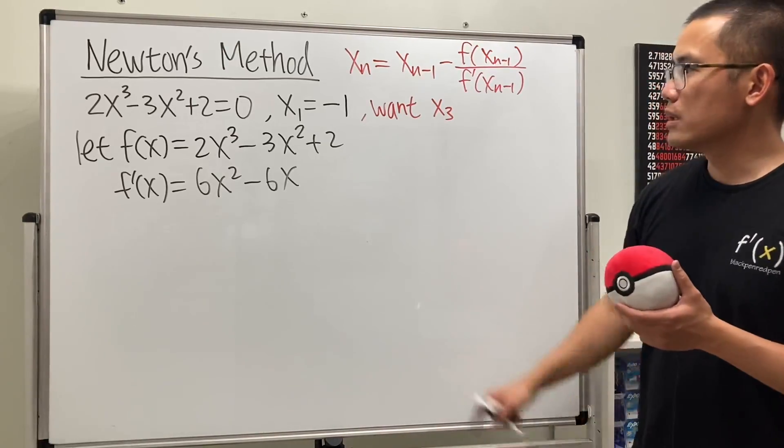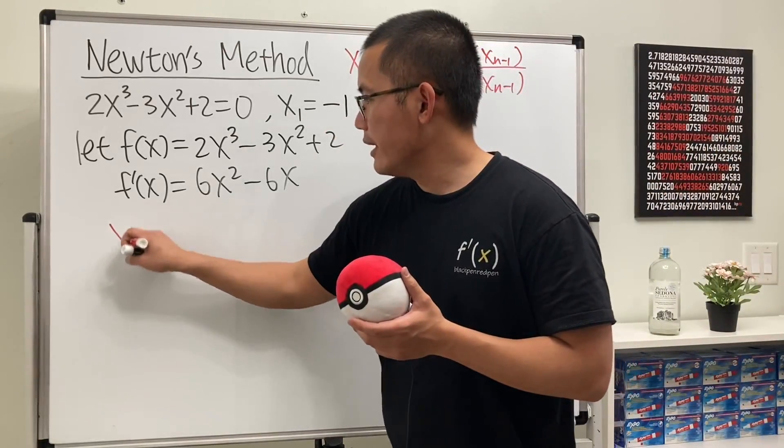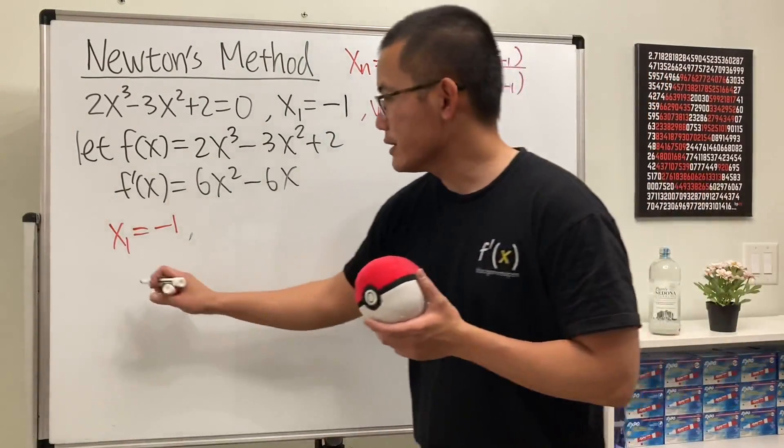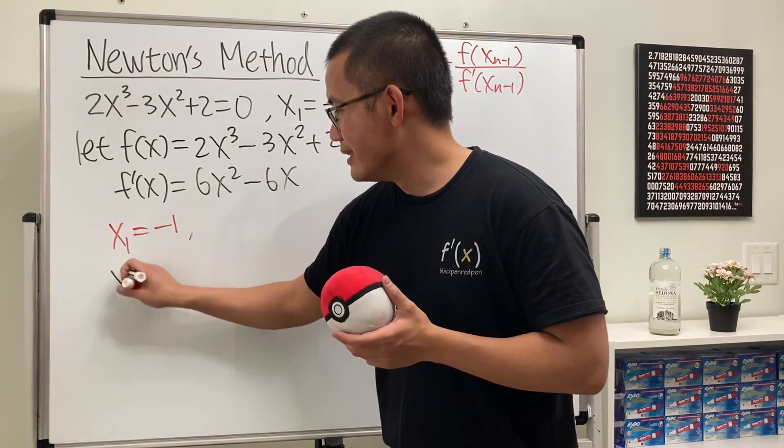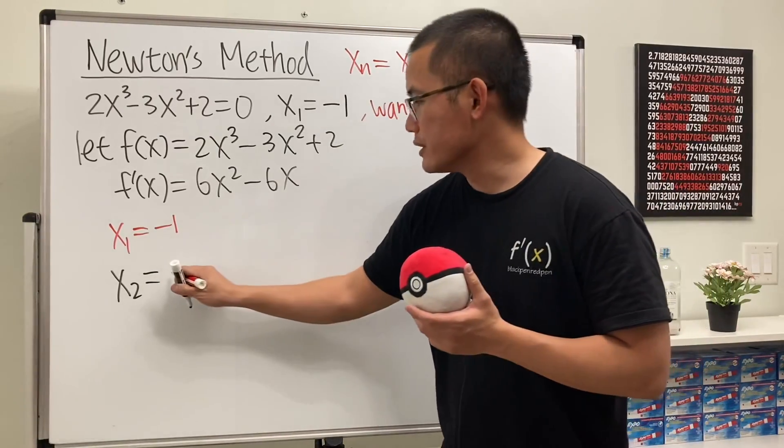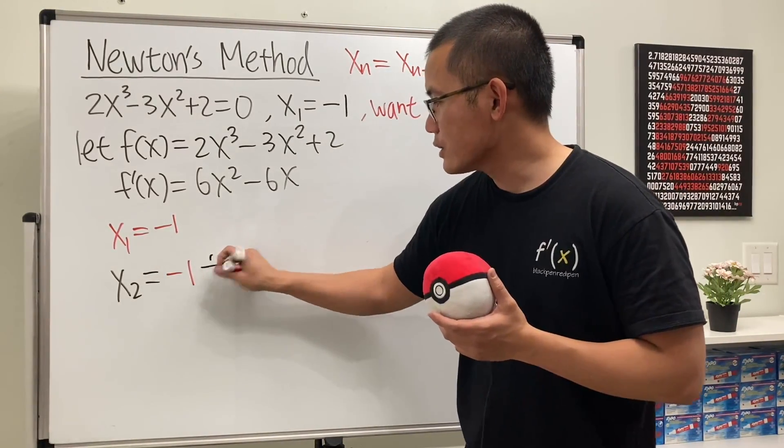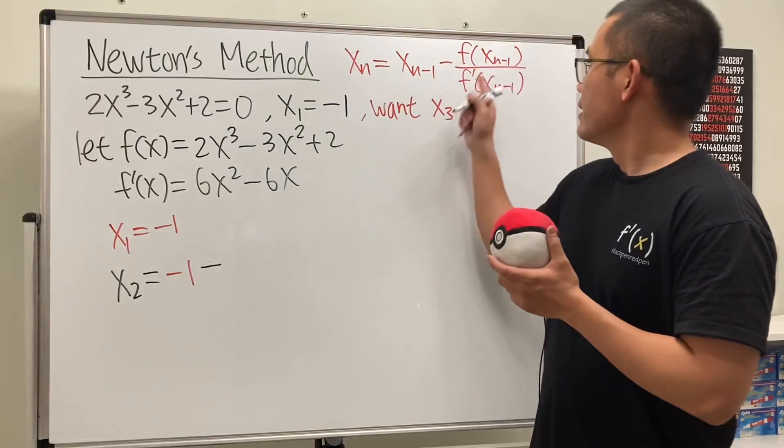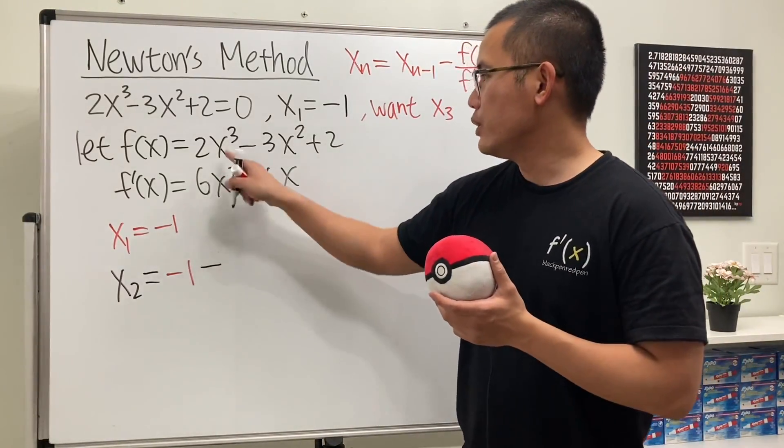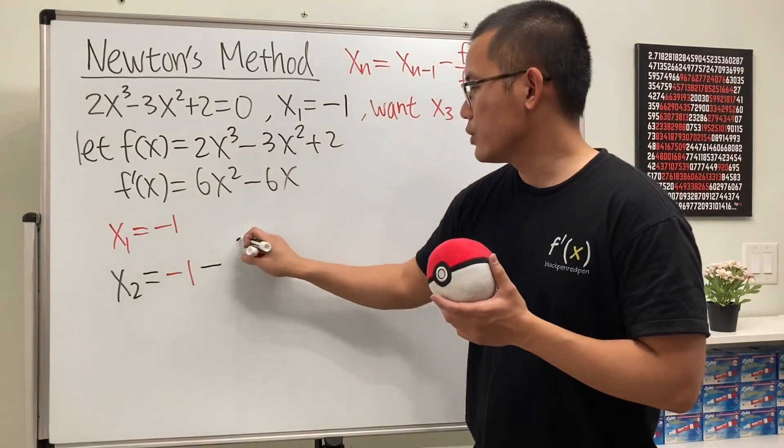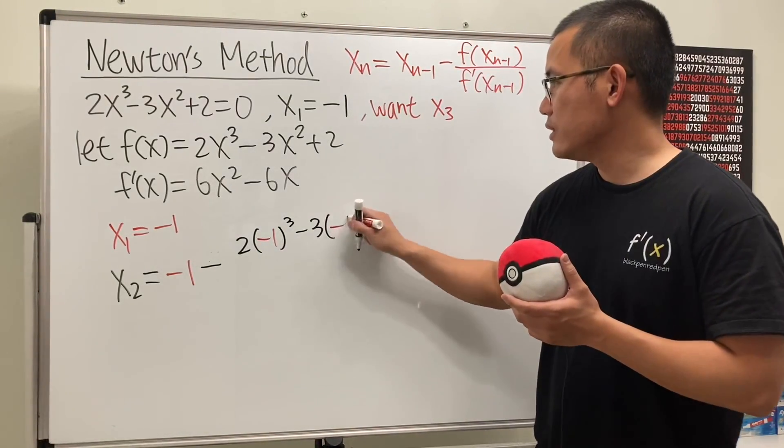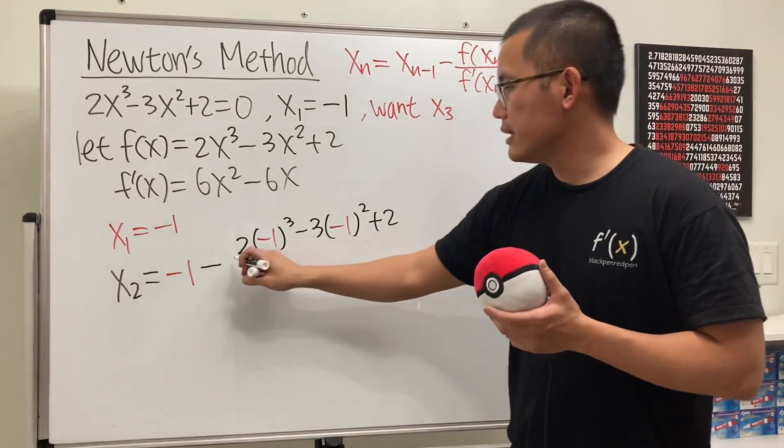So, let's go ahead and get to work. Firstly, we are given that x1 is equal to negative 1. So, that tells us, x2 is going to be, well, we use the previous x value, which is negative 1, and then we subtract the value of the function at the previous x value. So, we'll just plug in negative 1 into all these x's. So, we get 2 times negative 1 to the third power minus 3 times negative 1 squared and then plus 2.